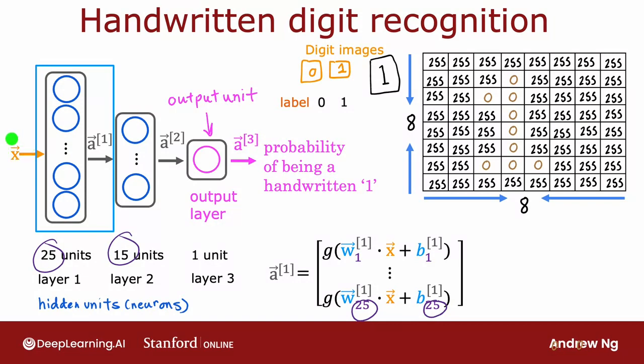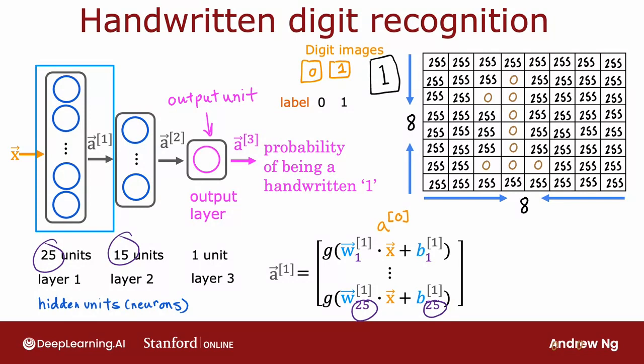And I've written x here, but I could also have written a0 here because by convention, the activation of layer 0, that is a0, is equal to the input feature value x. So that lets us compute a1. The next step is to compute a2.